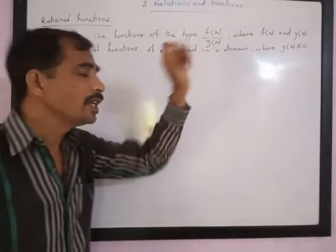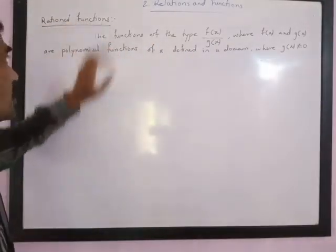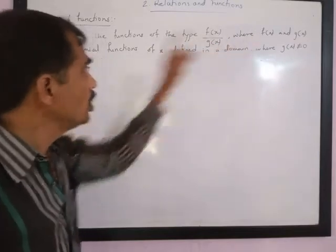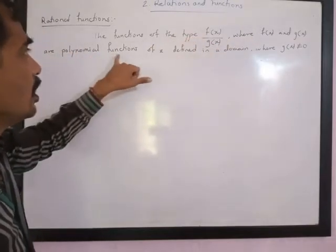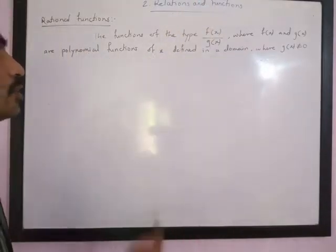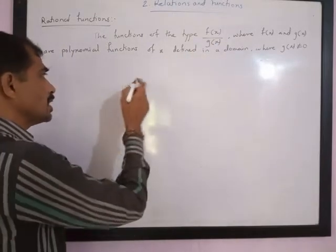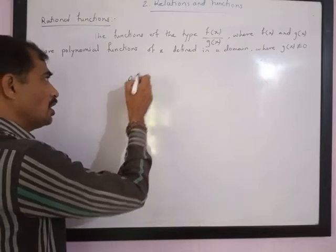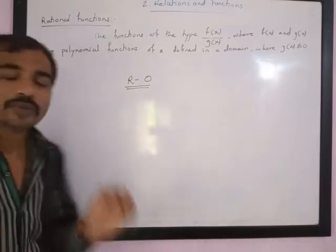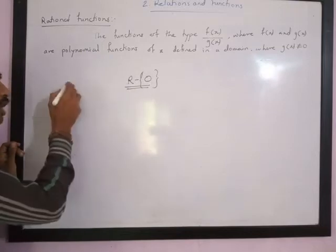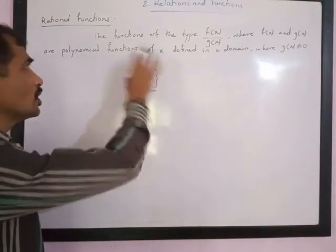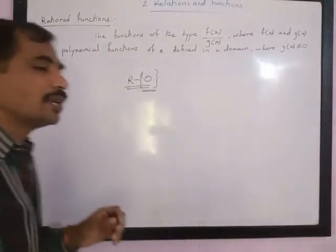Thus, the denominator can never be 0 in the case of rational functions. The functions of the type f(x) upon g(x), where f(x) and g(x) are polynomials, are defined in the domain where g(x) must not be equal to 0. So x will have all values of real numbers except those where g(x) = 0, otherwise the rational function becomes undefined.